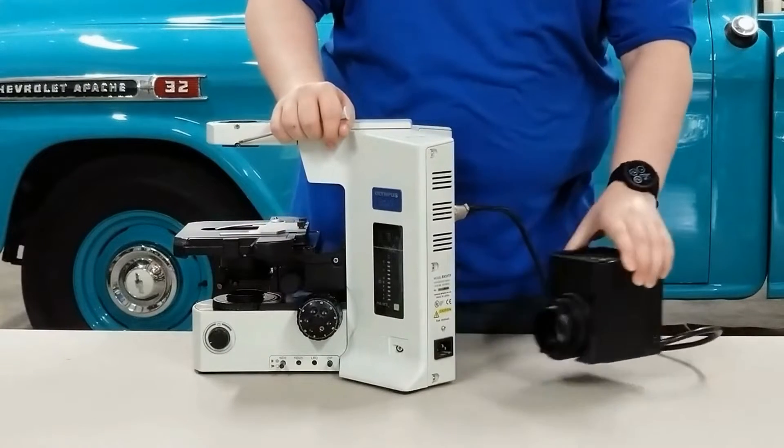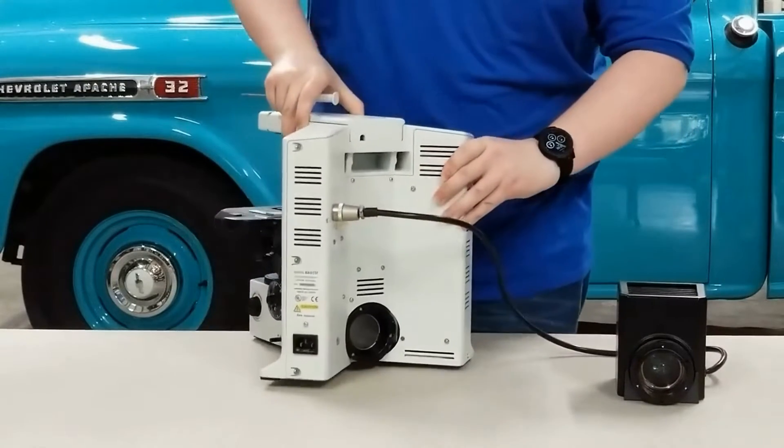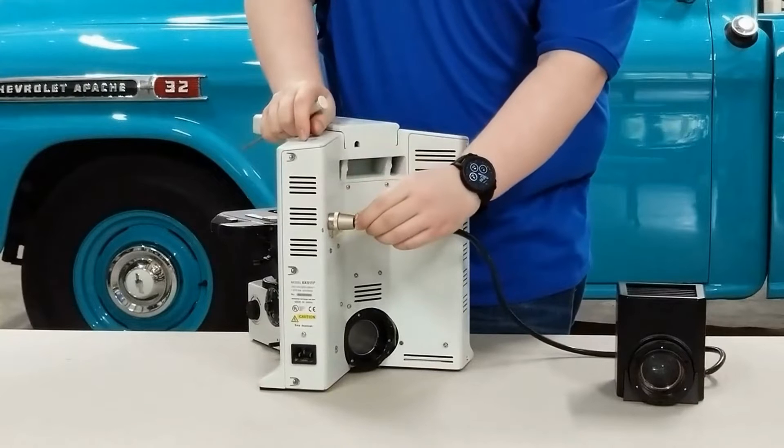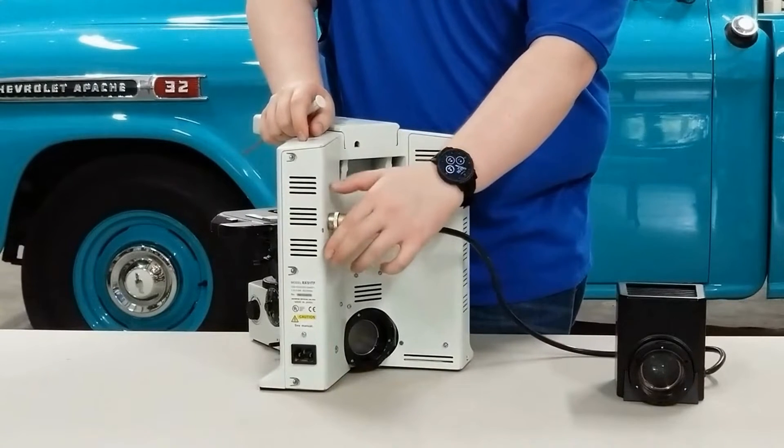Once you slide out the lamp house, turn the scope around and you'll see that silver plug on the back. Notice it has a spring-loaded collar like I'm showing you right now. Give it a quick twist and pull straight out and it will come detached.